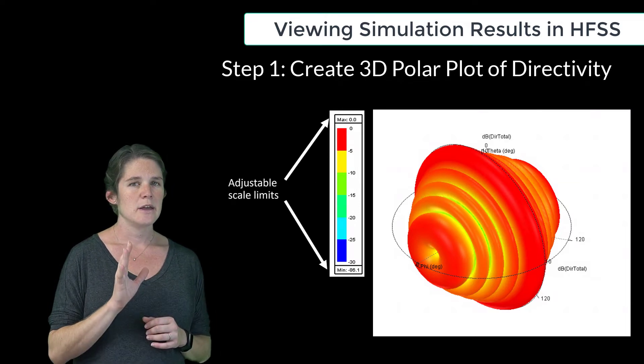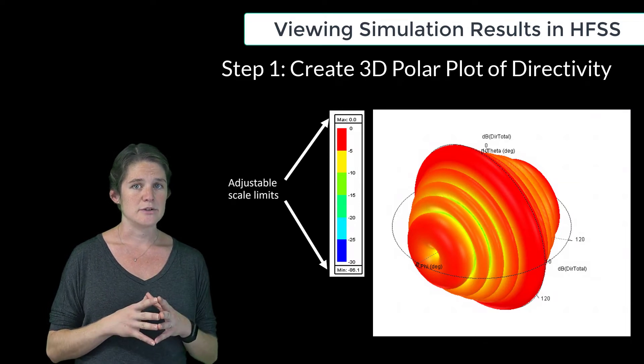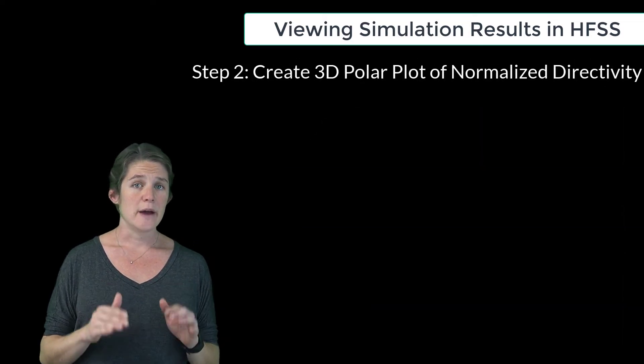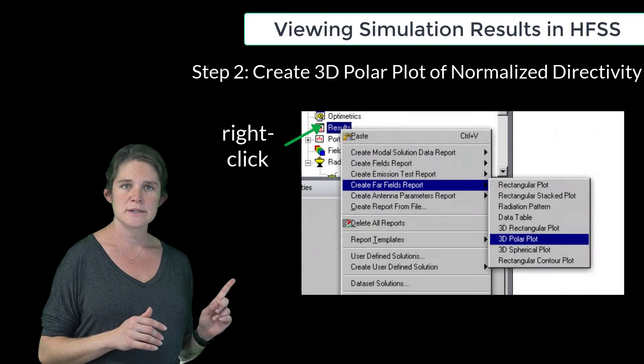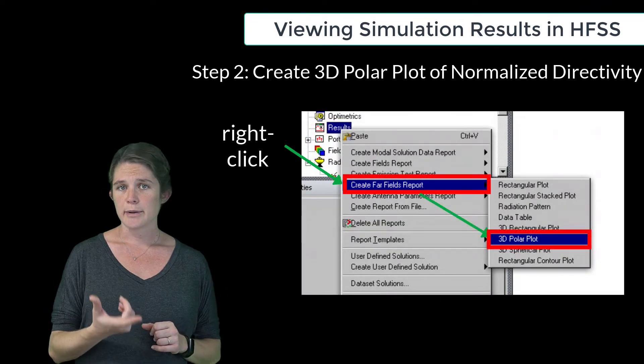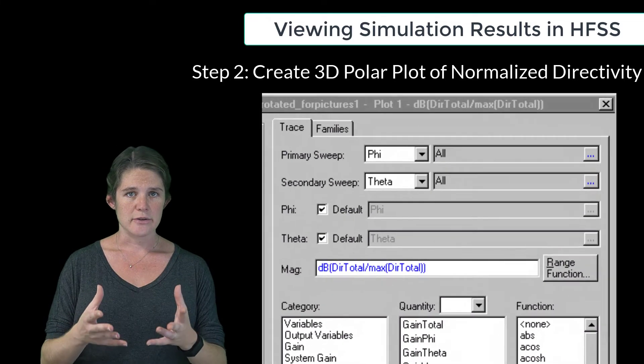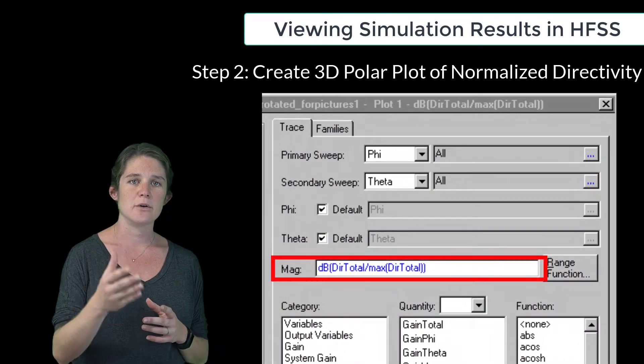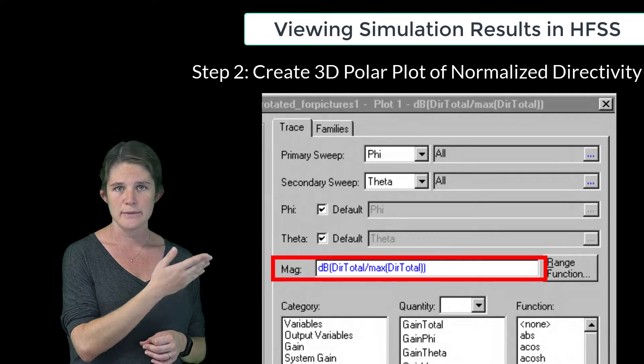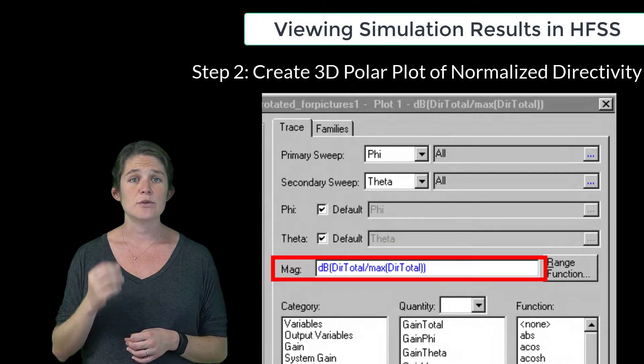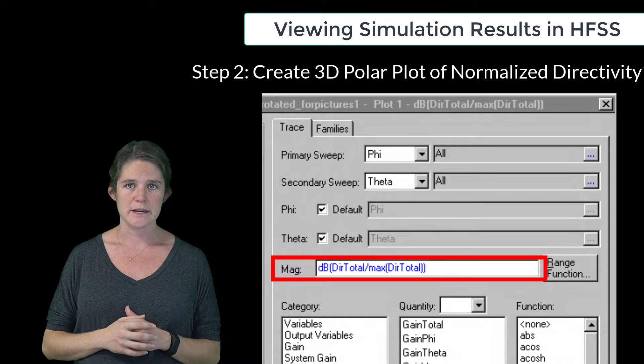Now, if you recall, in the previous module, we were looking at normalized directivity. If we want to view that result here, we can again right-click on Results, select 3D Polar Plot, and this time, instead of taking the simple directivity value that is given, we can type in an equation in the mag field, like this. So, this equation will give us the normalized directivity plotted in dB.